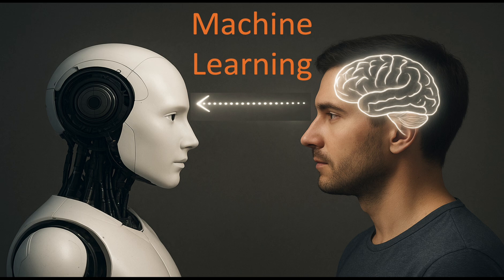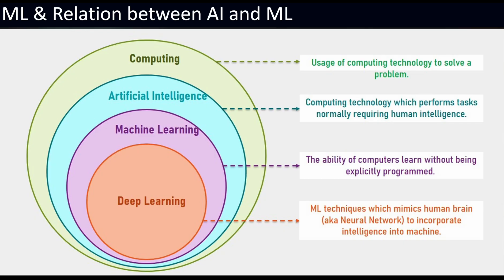Let us begin with the key question: What is machine learning? The ability of a computer to learn without being explicitly programmed. Fascinating, isn't it? This gives machines intelligence — and that is what makes machine learning a subset of artificial intelligence.